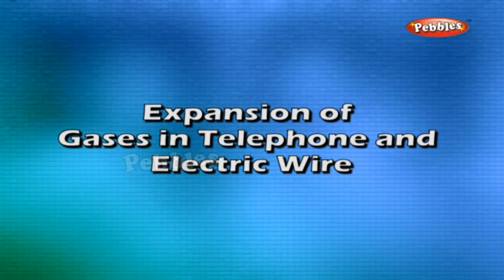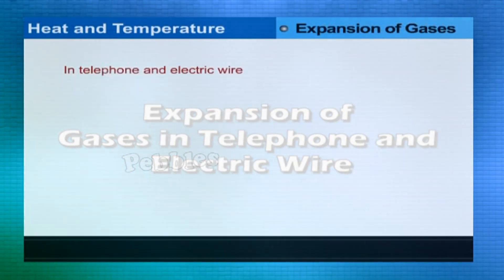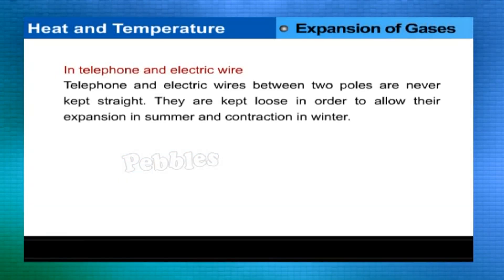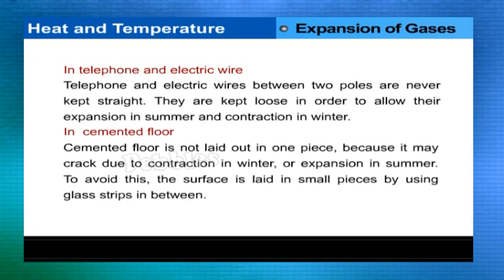Telephone and electric wires between two poles are never kept straight. They are kept loose in order to allow their expansion in summer and contraction in winter. Cemented floors are not laid in one piece because they may crack due to contraction in winter or expansion in summer. To avoid this, the surface is laid in small pieces using glass strips in between.